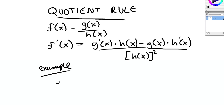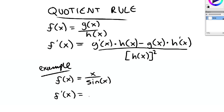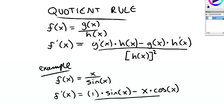For example, if the function of x is equal to x divided by sine of x, then the derivative of the function of x is equal to the derivative of the top function, 1, times the bottom function, sine of x, minus the top function, x, multiplied by the derivative of the bottom function, cosine of x, all over the bottom function squared, sine squared of x.